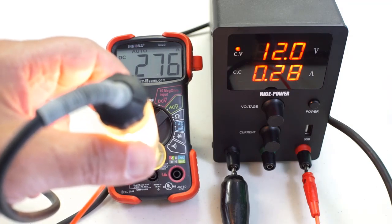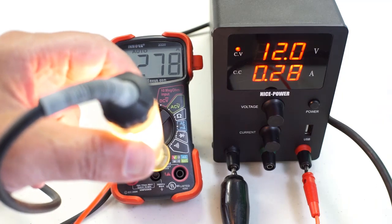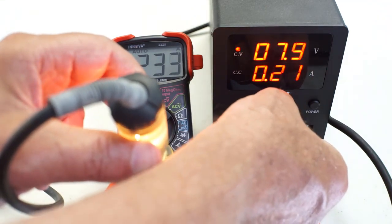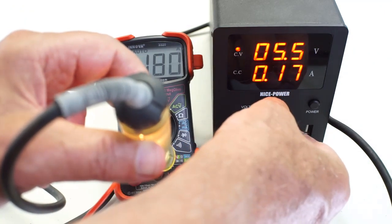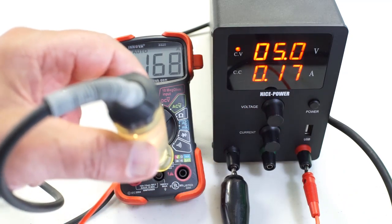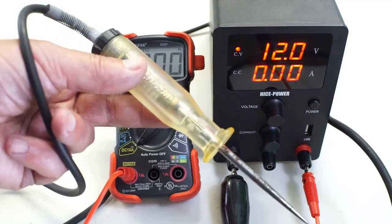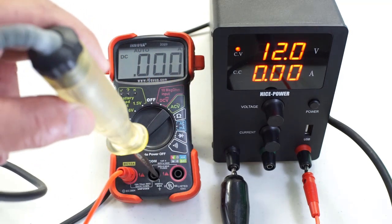At 12 volts this incandescent test light draws 275 milliamps and at 5-volt reference would draw 170 milliamps. Something else that we should suspect is that at first contact there would be a spike.